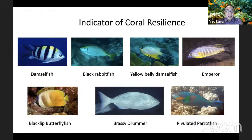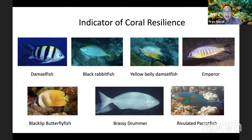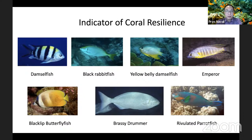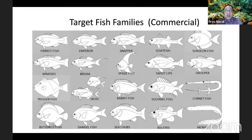Marine scientists look for so-called indicator species — fish whose presence indicates coral resilience. When you see these fish in a marine ecosystem, it means the coral ecosystem is doing well. Scientists are also interested in monitoring and counting target fish species — the commercially important fishes sold in the market for food.